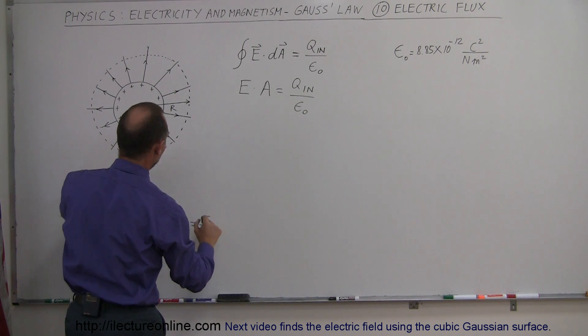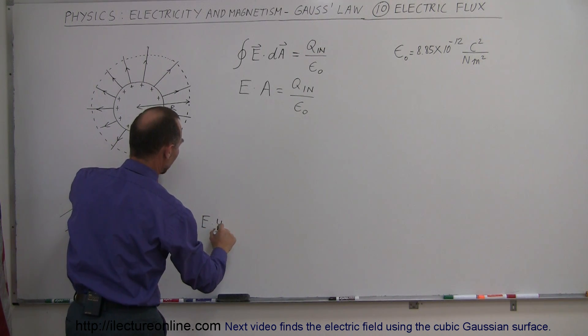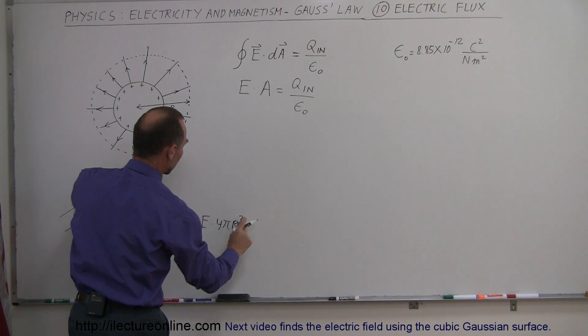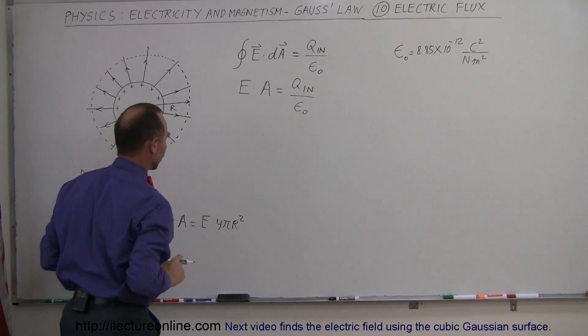So in this case, that would be equal to the electric field at the Gaussian surface times 4πr², which is the area of the Gaussian surface.